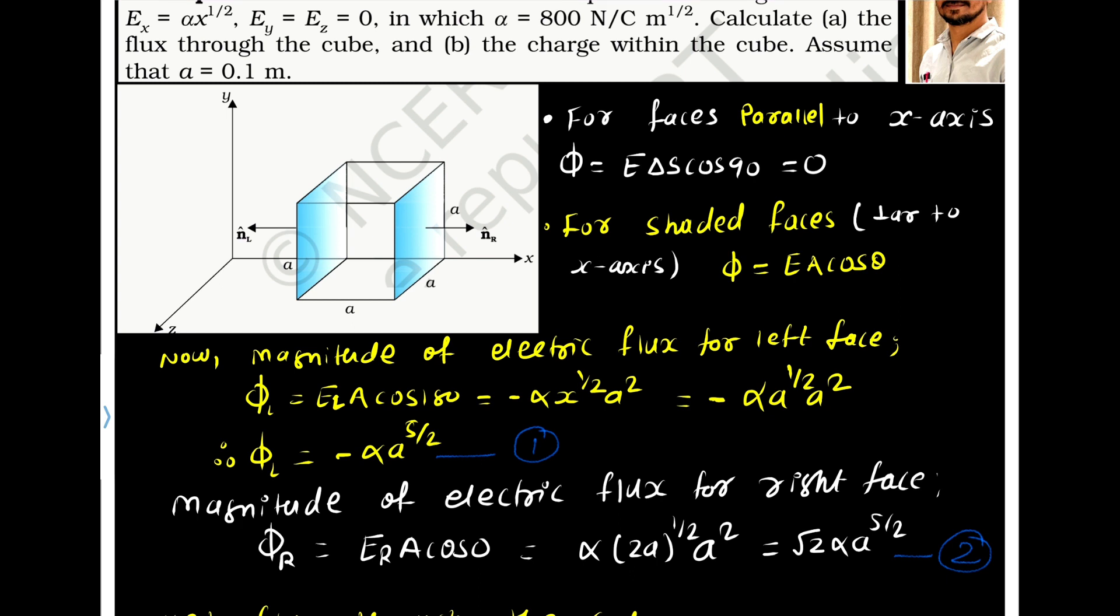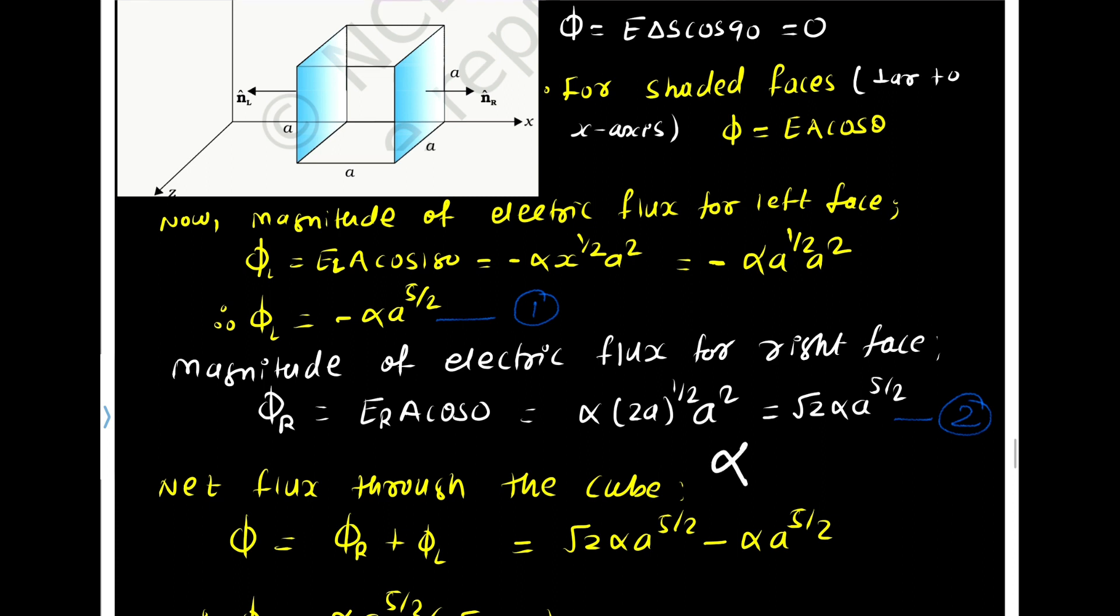Magnitude of flux for the right face is EA cos 0 because area vector and field are parallel. E = α x^(1/2), and the distance is a + a = 2a, so x = 2a raised to 1/2 times a². Solving this gives α √2 times a^(1/2) a². On rearranging, we get √2 α a^(5/2).